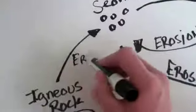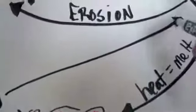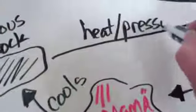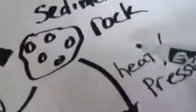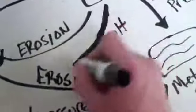Alright, now igneous rock could erode away into sediments, going through this whole cycle again. Or it could be heated and pressurized to the extreme and become metamorphic. So it has two ways. It can go sedimentary or go metamorphic. There's other things here too.